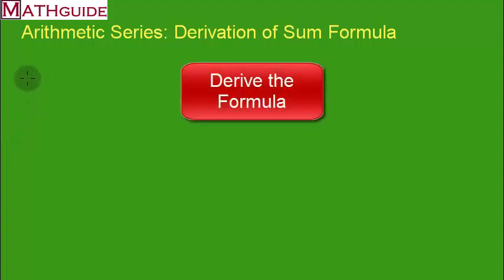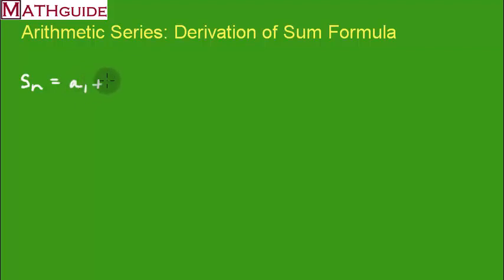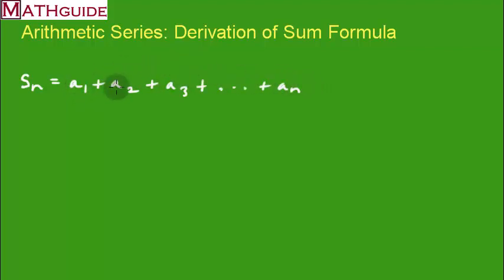Let's prove it. So let's say we have a series. We have some terms all being added together. We know a little something more: there is a common difference — you add the same value to go from one term to the next, and we call that value d.